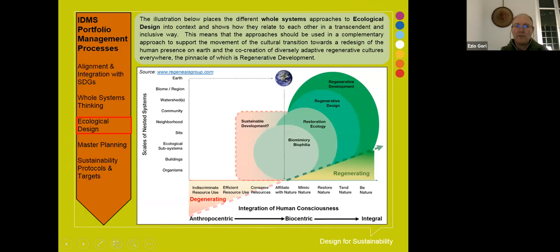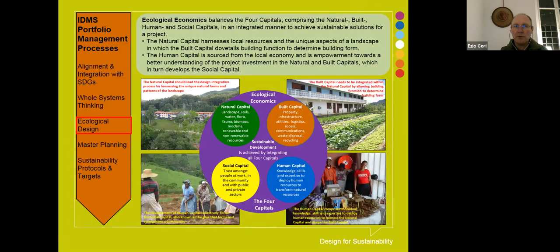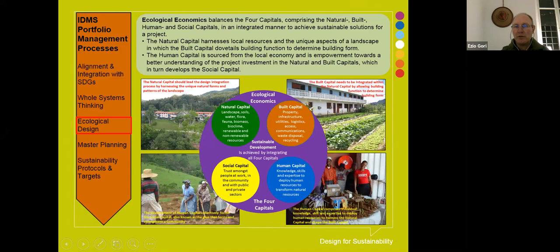The form of ecological design I prefer to use is ecological economics, simply because it's easy to explain. It balances four capitals — natural, built, human, and social — and integrates them to achieve sustainable solutions. The natural capital can be illustrated by buildings that hardly intrude on a slope within a re-established forest. The built environment dovetails into the natural environment. Human resource development is critical — if we develop human capacity and involve communities in design or construction, there's better appreciation for assets. That in turn develops social capital, which is the glue within the community that looks after these projects.